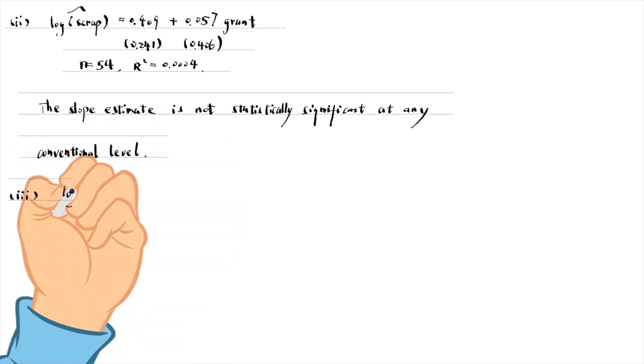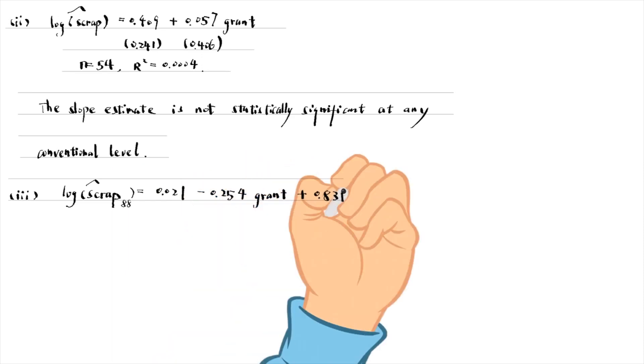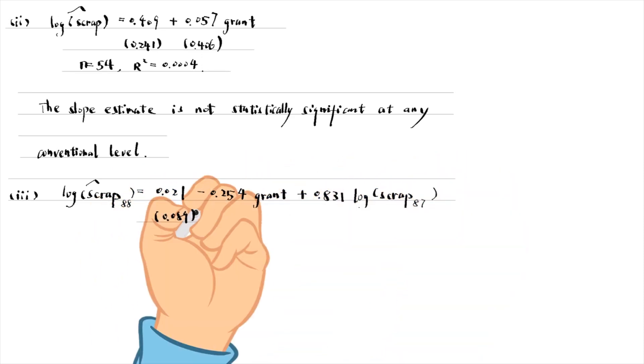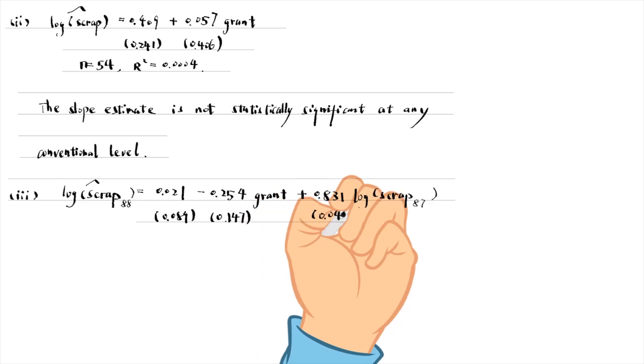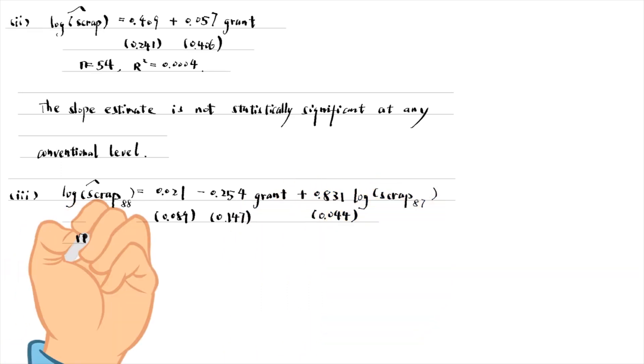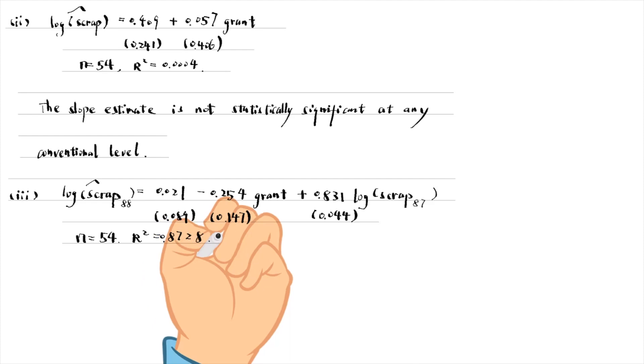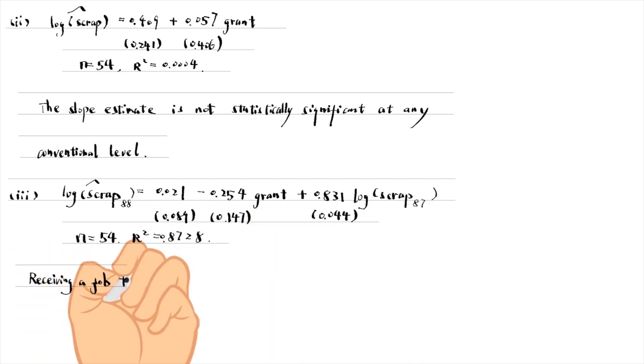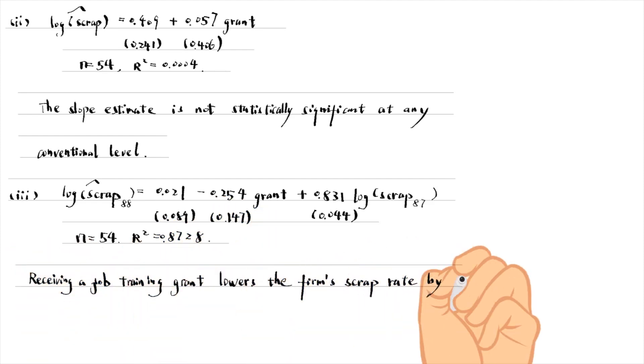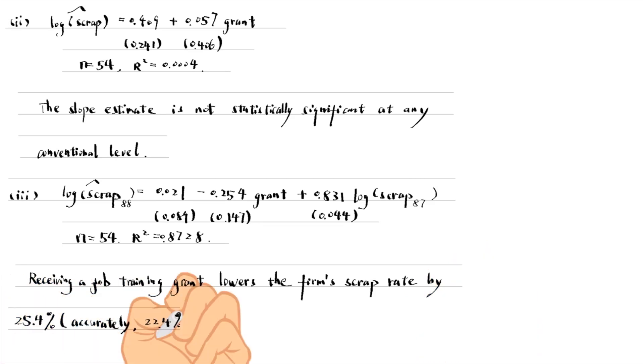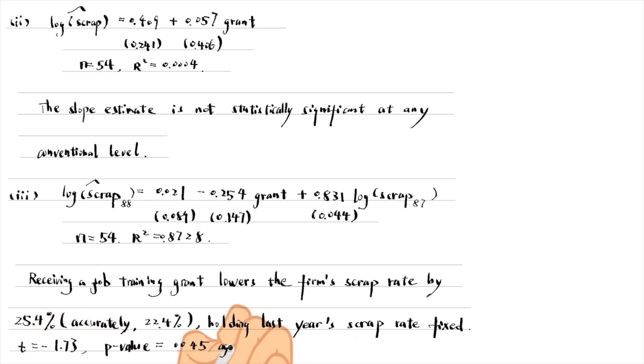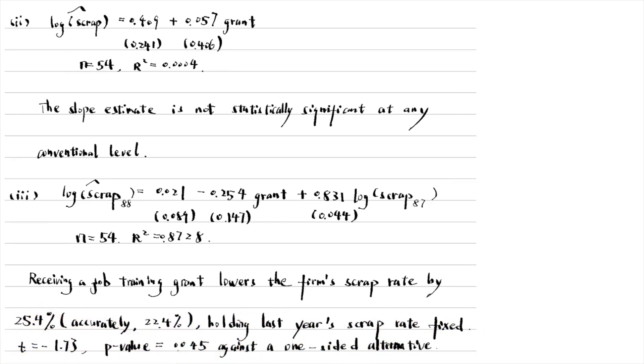We add last year's scrap rate as an explanatory variable to the model in part 3. The estimated coefficient on the variable grant becomes negative. It suggests that receiving a job training grant lowers the firm's scrap rate by about 25.4%, holding last year's scrap rate fixed. The T-statistic is minus 1.73, and its p-value is 0.045.